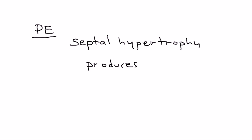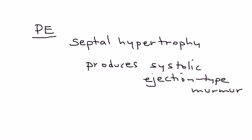One thing that I wanted to mention on the physical exam that's very important, and this is definitely tested on clinical vignettes, is that this septal hypertrophy produces a very interesting murmur. It's called a systolic ejection type murmur when you auscultate the heart. And there's two specific things that you can do to increase or decrease the murmur sound.